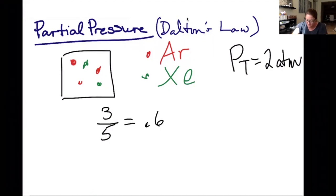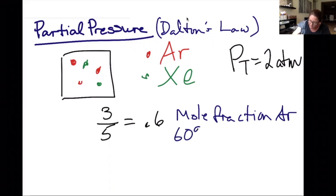This term here is known as the mole fraction of argon. I can say that the mole fraction is 0.6, or I can say that 60% of the molecules are argon. And what this means is 60% of the pressure is due to argon.